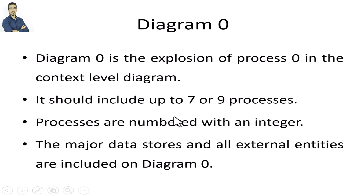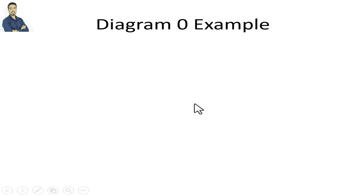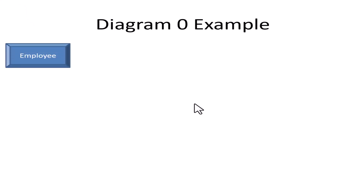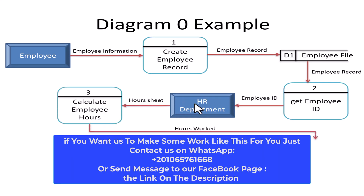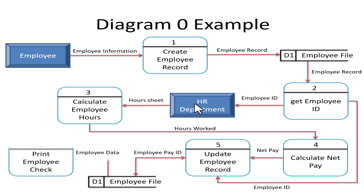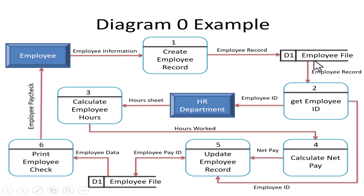Now let's go to diagram zero. Level zero can have seven or fewer processes — yes, it can be less than seven. In level zero we draw seven or fewer processes, some data stores (employee files), and we reuse the same external entities from the context diagram.